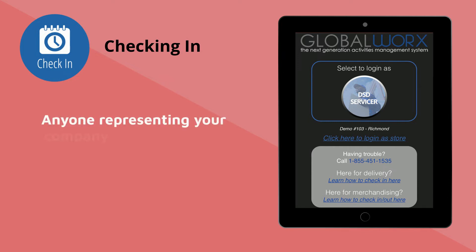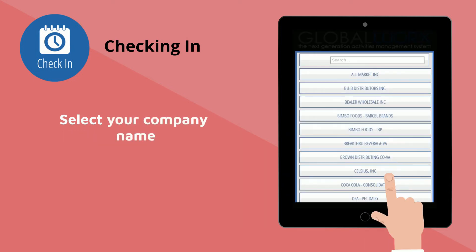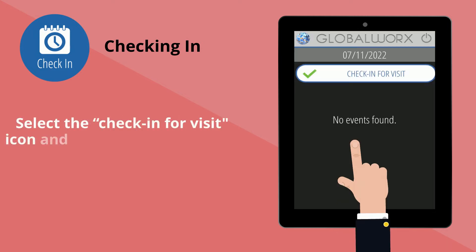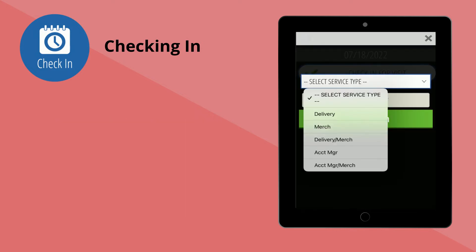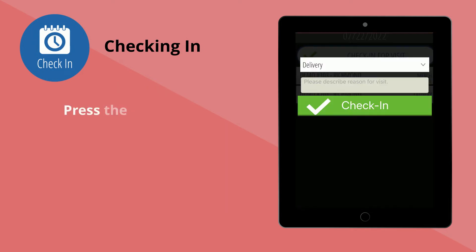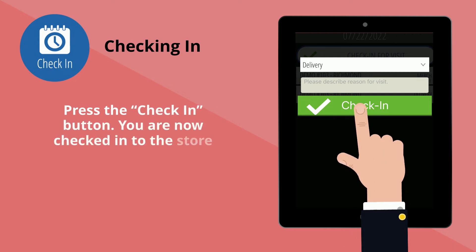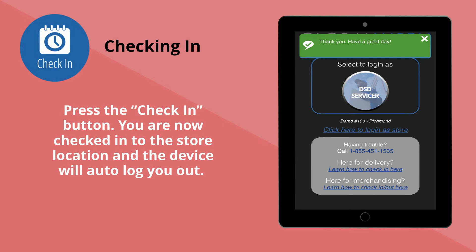Checking in: Anyone representing your company will be required to check in. Select the DSD Servicer button, select your company name, and select Continue. Select the Check In for Visit icon, then select the service you will be providing: Delivery, Merchandiser, Delivery Merchandiser, Account Manager, or Account Manager Merchandiser. Press the Check In button. You are now checked into the store location and the device will auto-log you out.